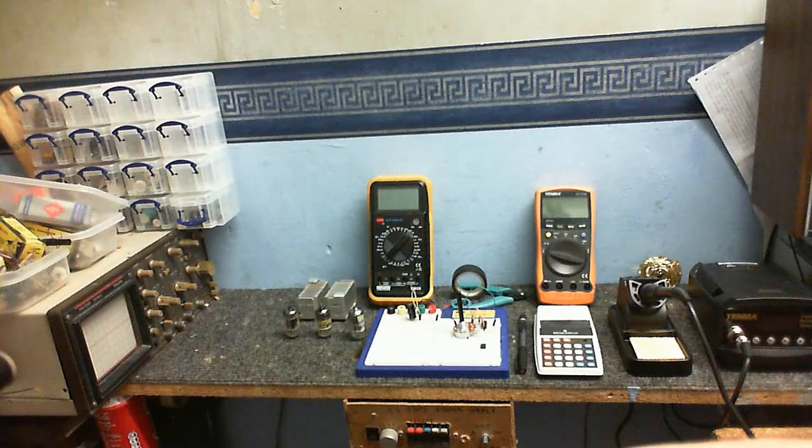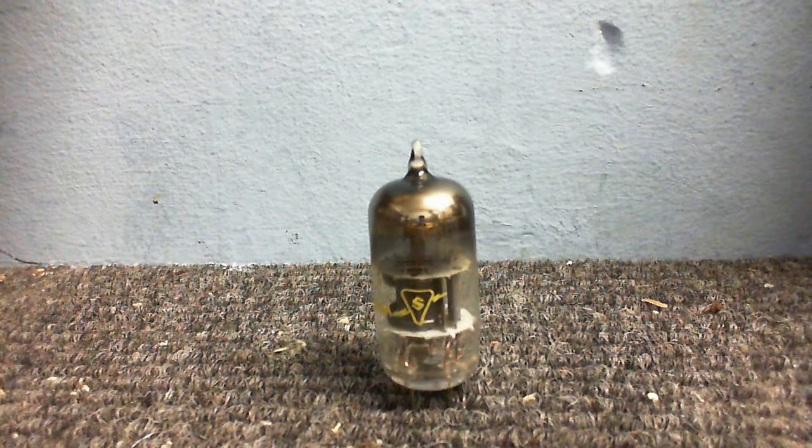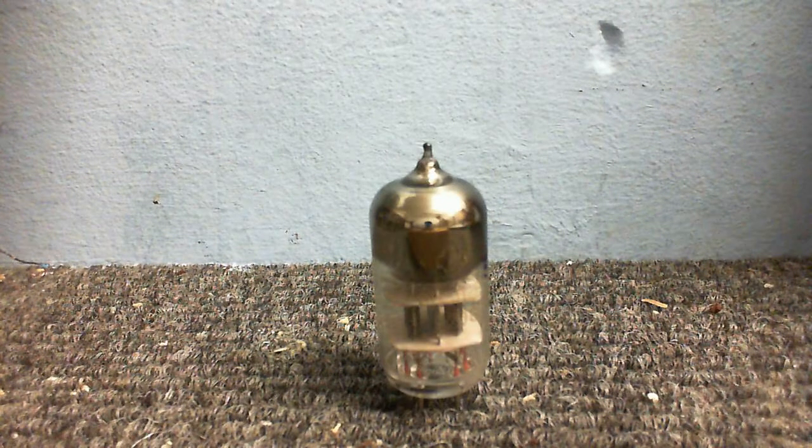So let's meet the tubes. We have a 12A7 which is a dual triode, a 12EC8 which is a triode pentode, and finally a 6N3P, another dual triode. This is the one I'm going to try first.